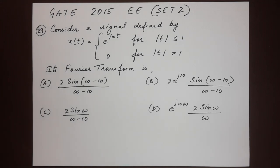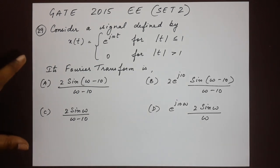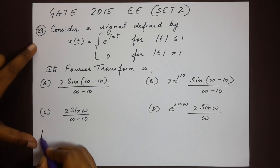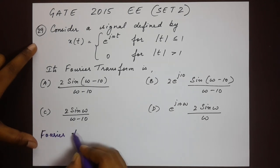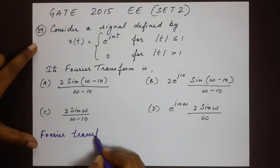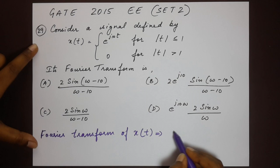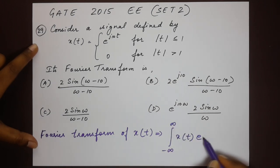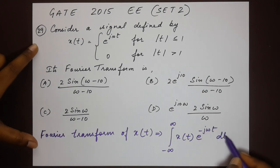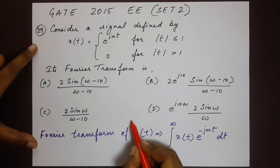We have four options. We start by writing down the basic Fourier transform formula for a signal: X(ω) = integral from minus infinity to infinity of x(t) · e^(−jωt) dt. This is a very important formula — please make a note of this.